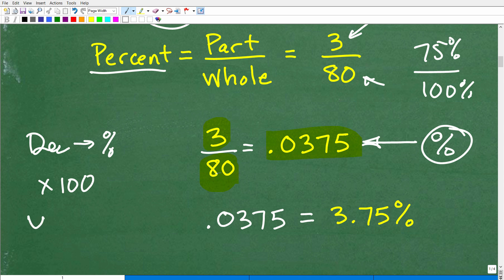So to go from a decimal to a percent, you simply multiply by 100, which effectively is the same thing as moving the decimal point over two places to the right. So we're going to take this decimal, 0.0375, and we're going to scoot that decimal point two places to the right, and we get 3.75%. That is the answer.